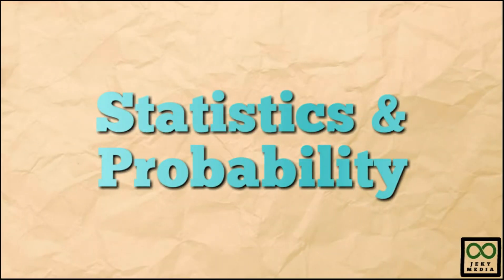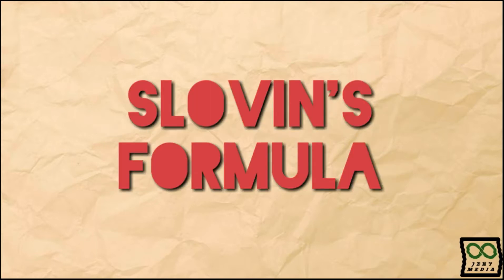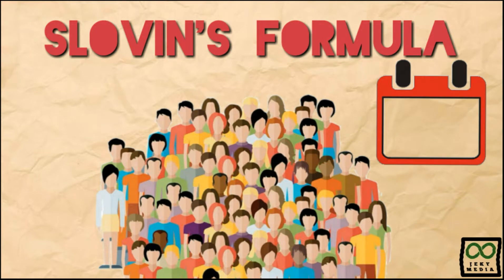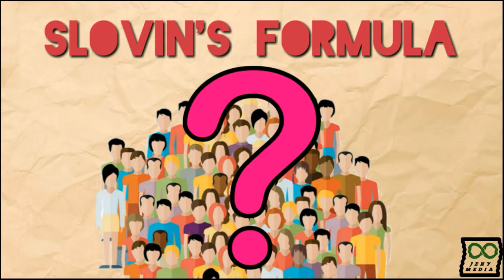Today's video is about a topic in statistics and probability: the Slovin's formula. Suppose you are a researcher, and you need to study a community with a large number of population for a target market. But you are running out of time, since your boss told you to submit the data a week ahead, and you don't have any idea of the behavior of each member. What would you do?